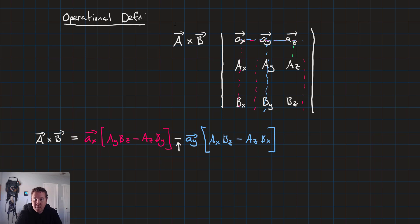And finally, the third component, the matrix of a sub x, b sub x, and a sub y, b sub y. So we'll say plus a sub z times a sub x times b sub y minus a sub y times b sub x. And there we go. There's our formula for calculating the cross product of our three dimensional vectors.